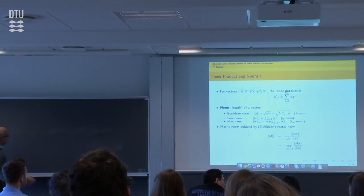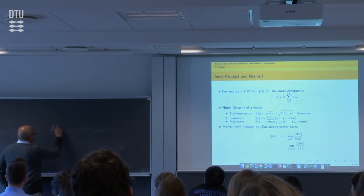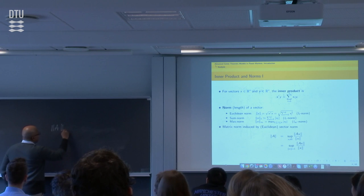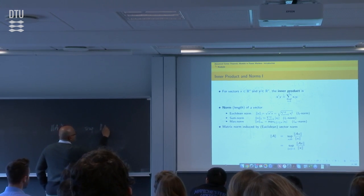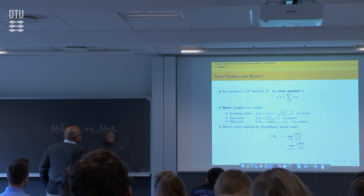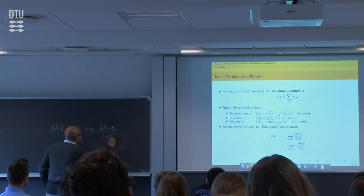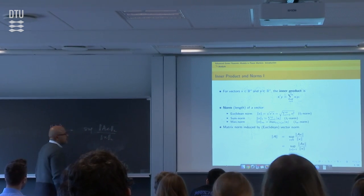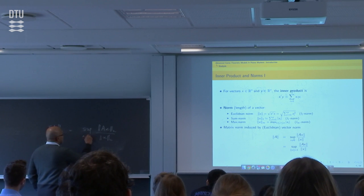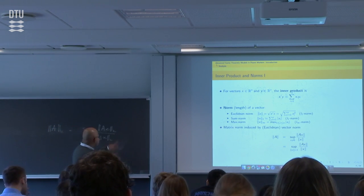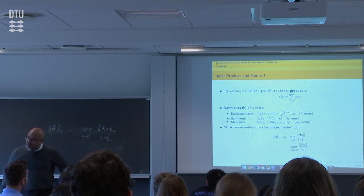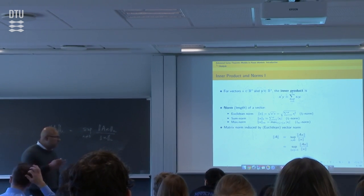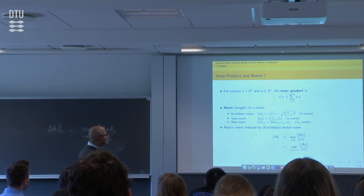This is actually an induced norm. For instance, if I say the 2-norm, you get the supremum of ‖Ax‖₂. If this is the infinity norm, it will be the infinity norm of the matrix. There is also the Frobenius norm. I am not going to get into those here, but that is the definition of a matrix norm.